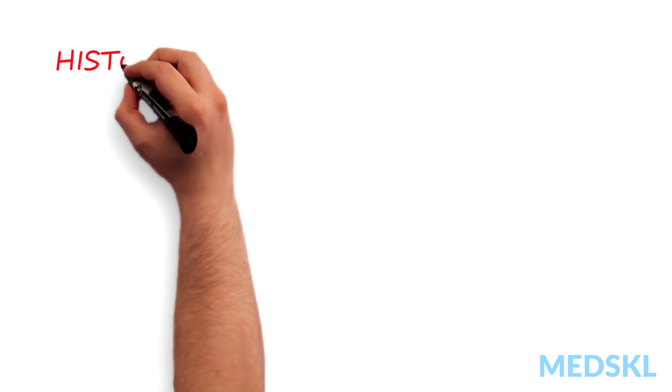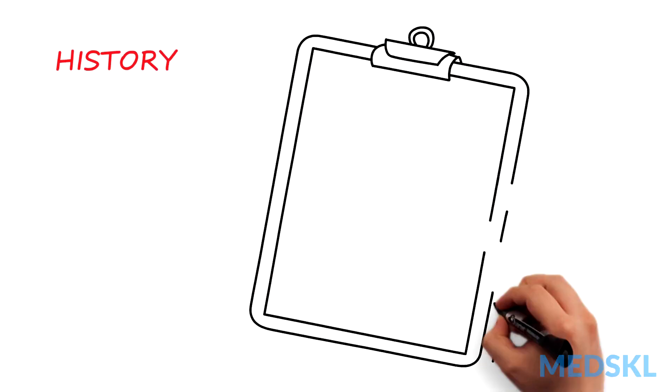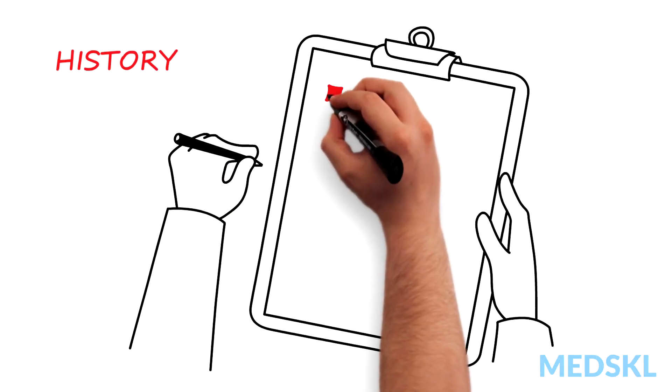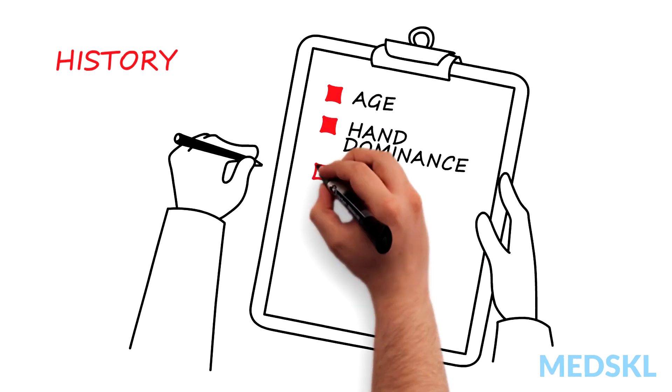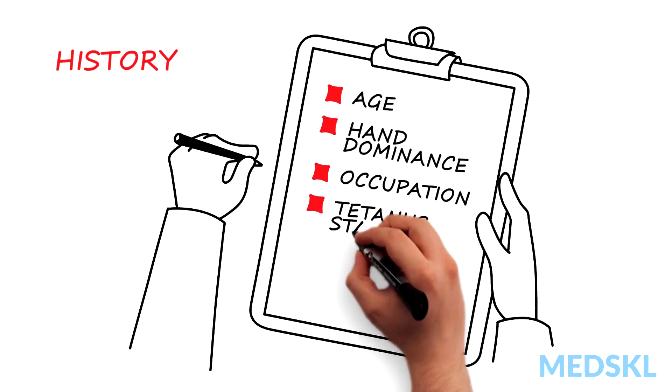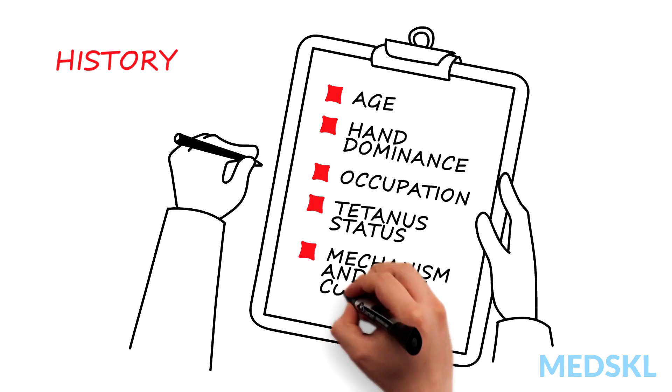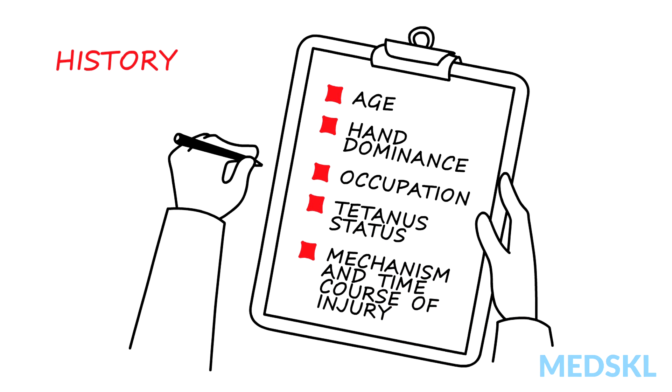When obtaining a history from the patient, it's important to note the patient's age, hand dominance, occupation, tetanus status, the mechanism, and the time course of the injury. These factors are important in risk stratifying the patient.